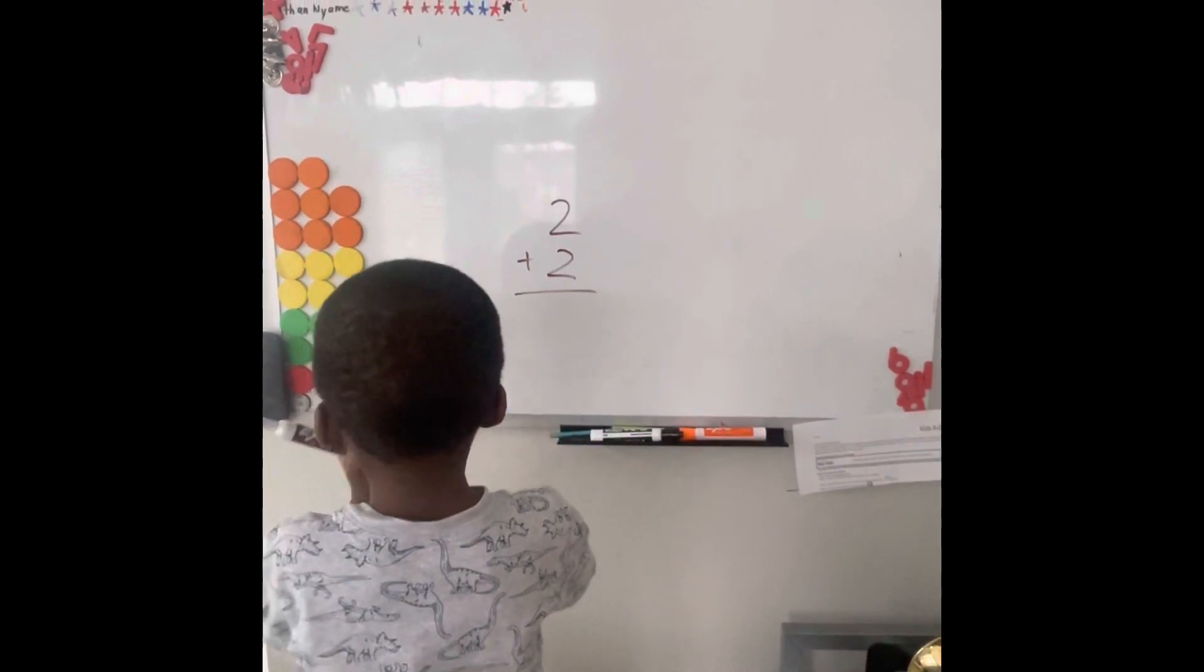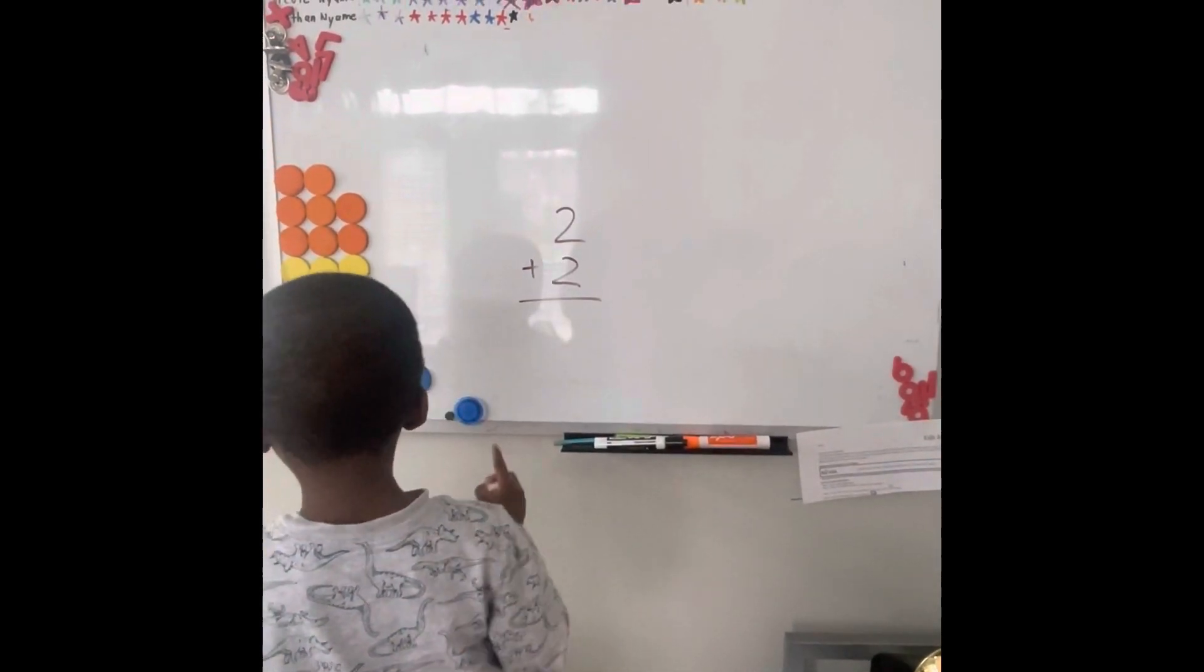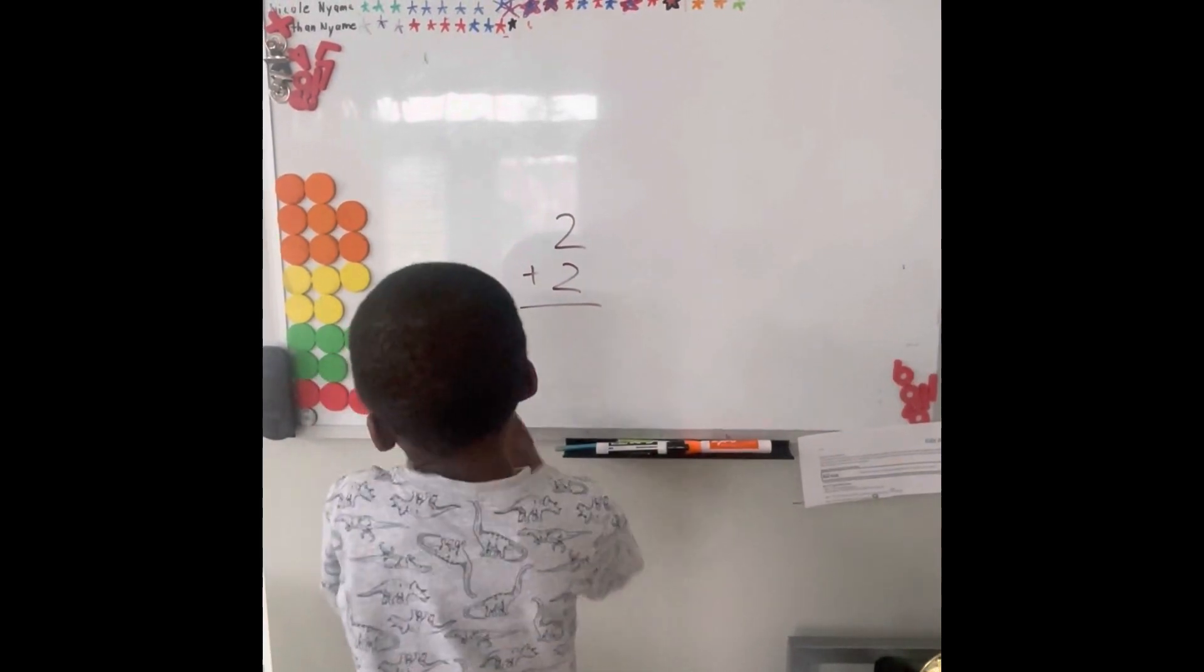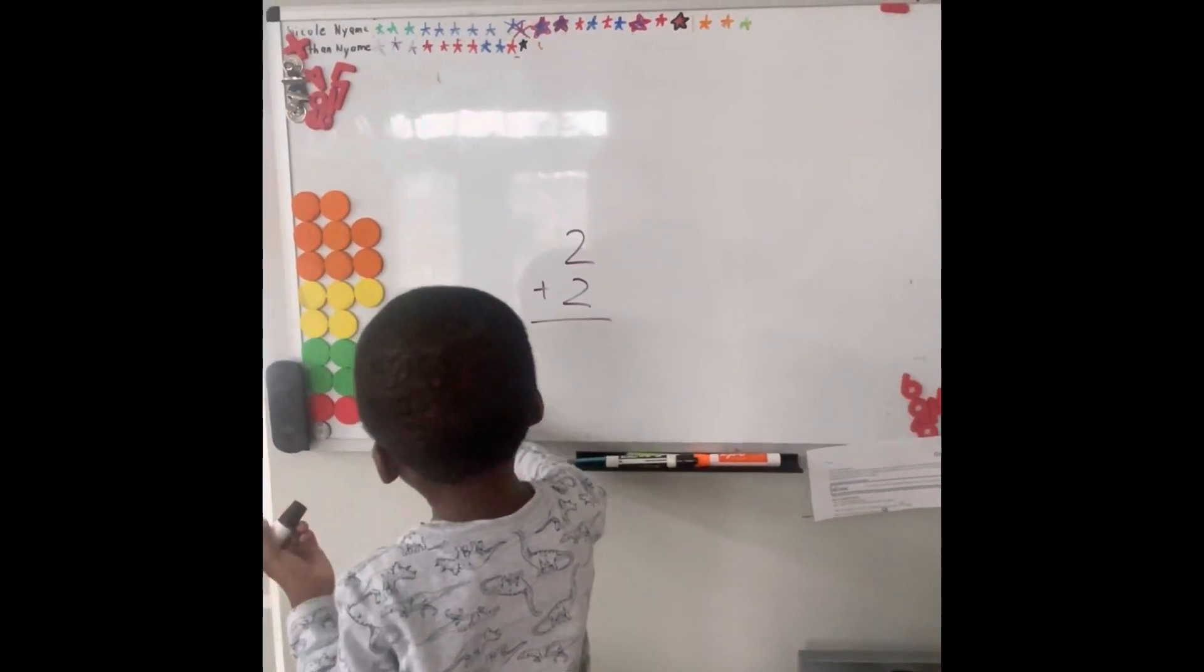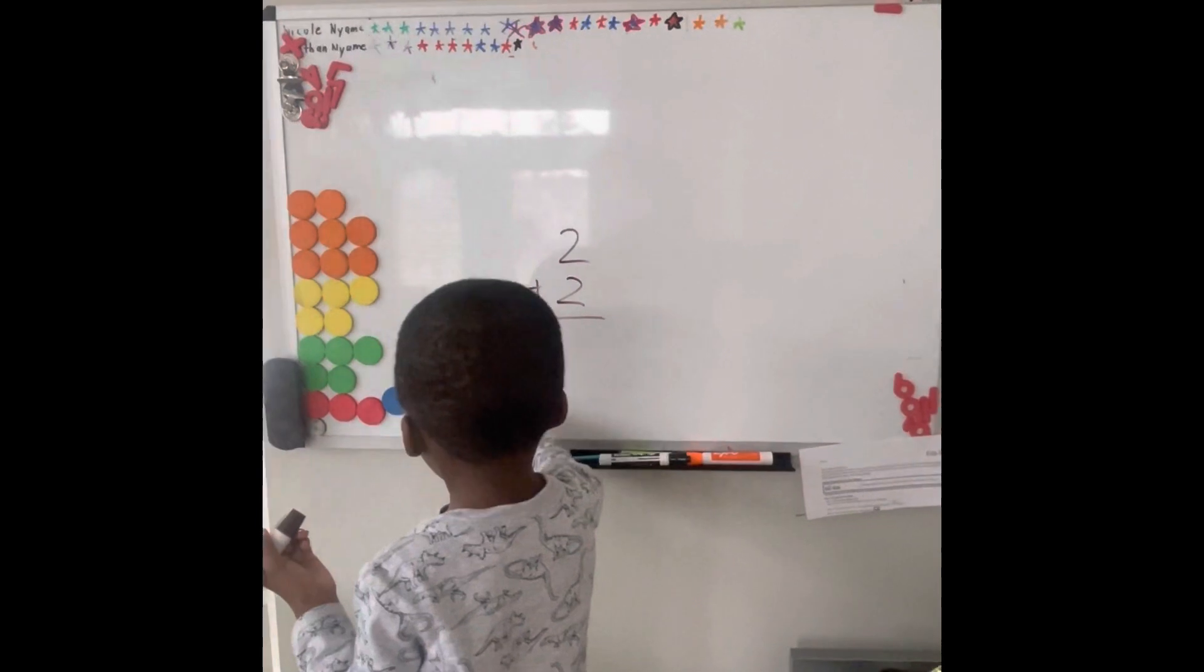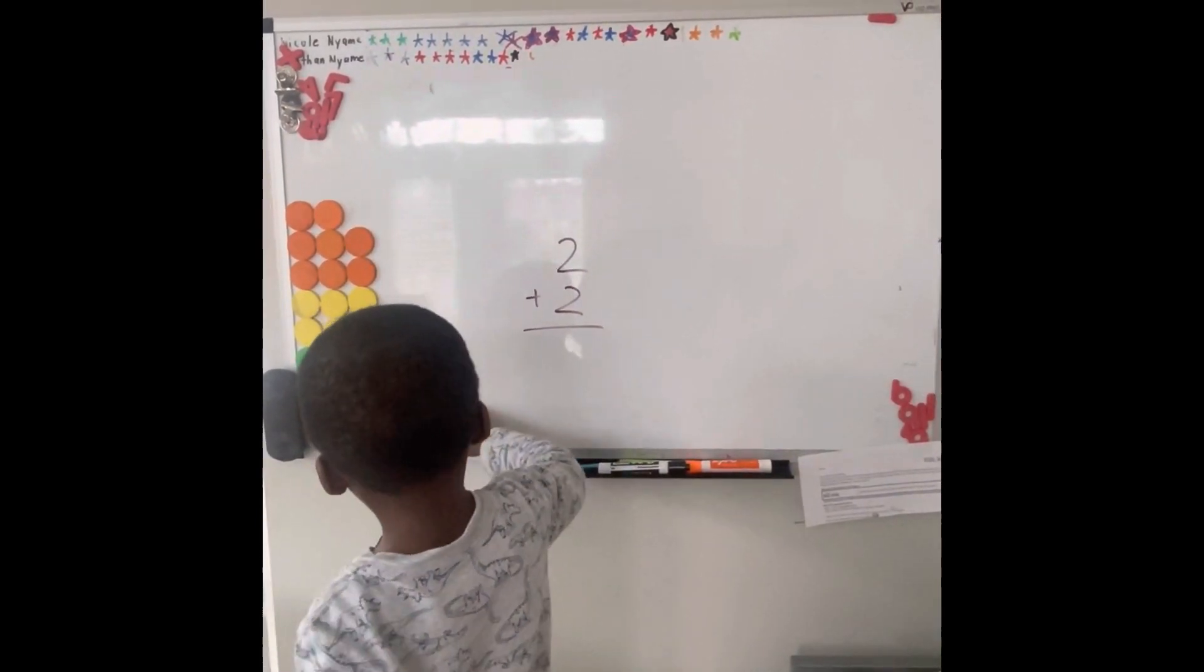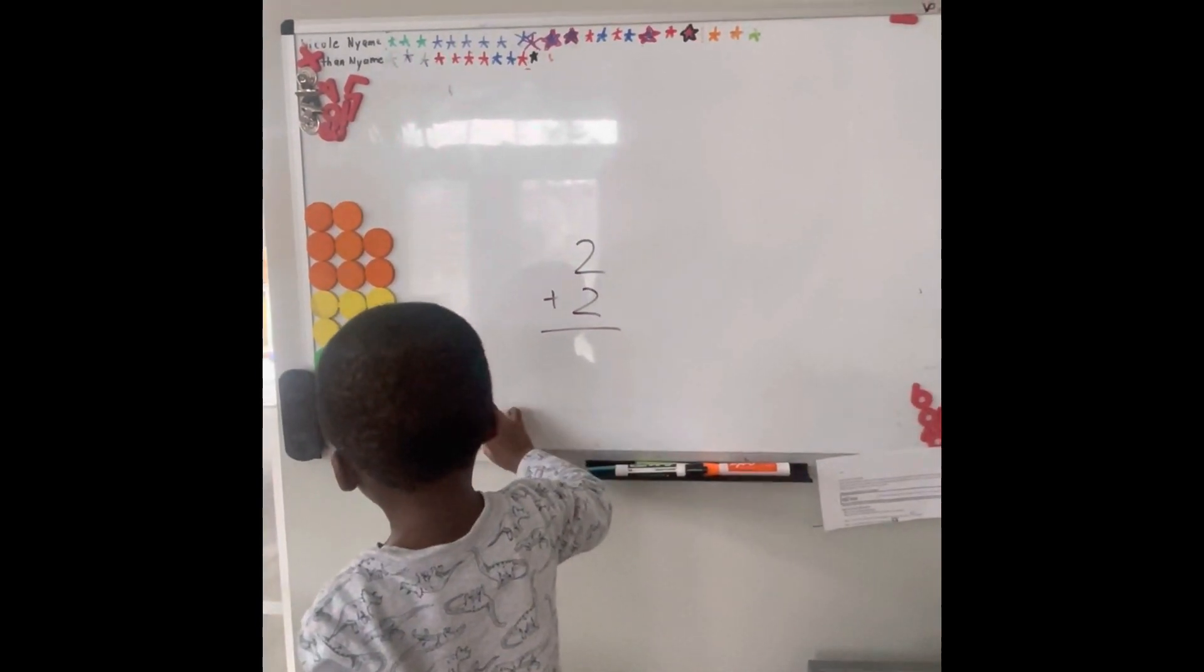That's knowing that a certain number corresponds to a certain number of objects. For example, two corresponds to two objects. Once a child has that, this is a quick and simple method that I use to introduce addition. I started this with both children when they were about maybe two, two and a half.